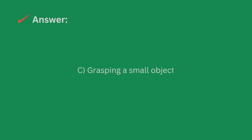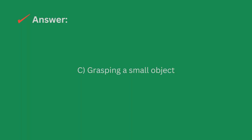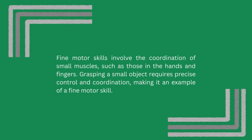The answer is letter C, grasping a small object. Fine motor skills involve the coordination of small muscles, such as those in the hands and fingers. Grasping a small object requires precise control and coordination, making it an example of a fine motor skill.